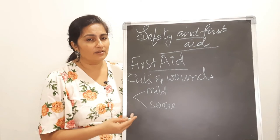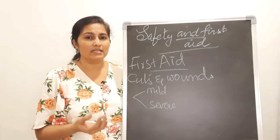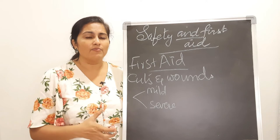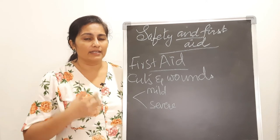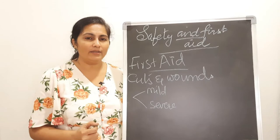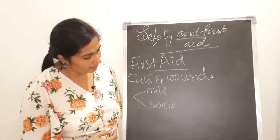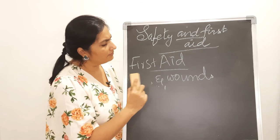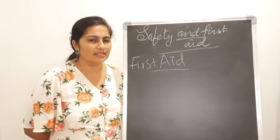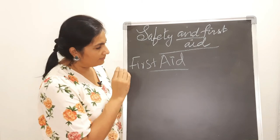For severe or deep wounds, the priority is to prevent germs and dust from entering. Immediately wash the wound, and if bleeding is severe apply firm pressure. Sometimes a tourniquet — a bandage-like cloth tied just above the wound — is used to stop heavy bleeding. Give the person some water and take them to the doctor. Also note that doctors often recommend an anti-tetanus (TT) injection for cuts and wounds, as tetanus organisms are commonly found in dust.